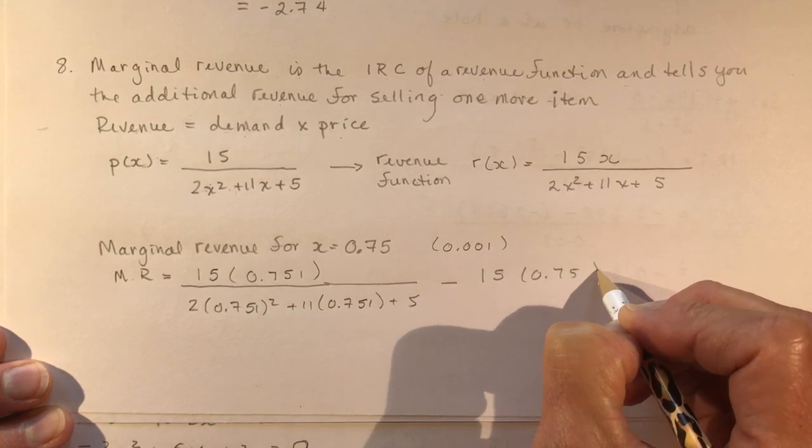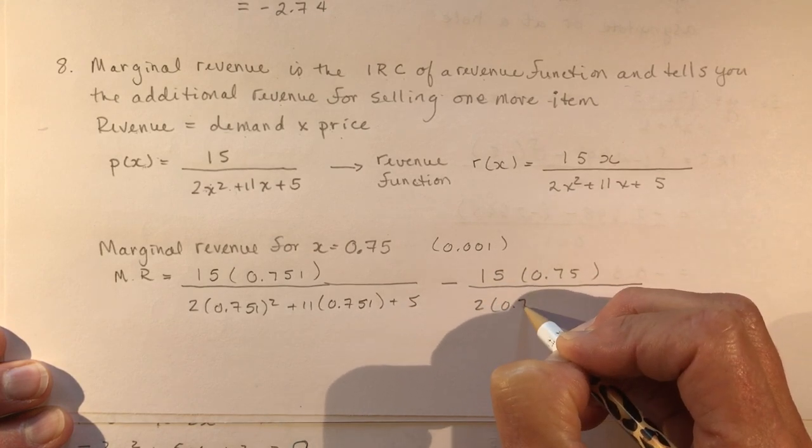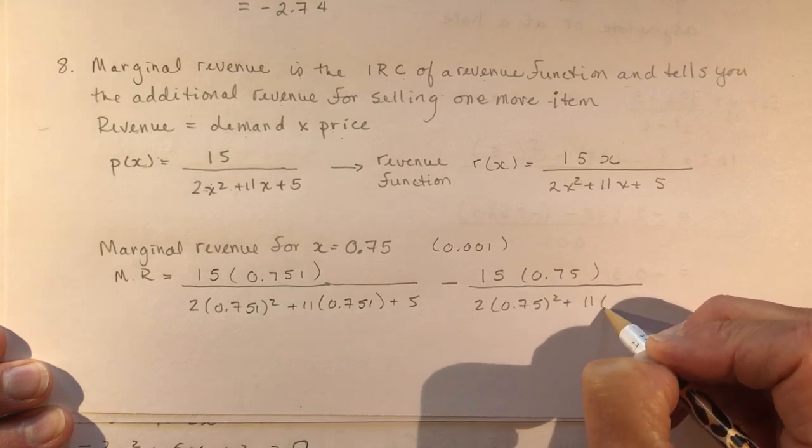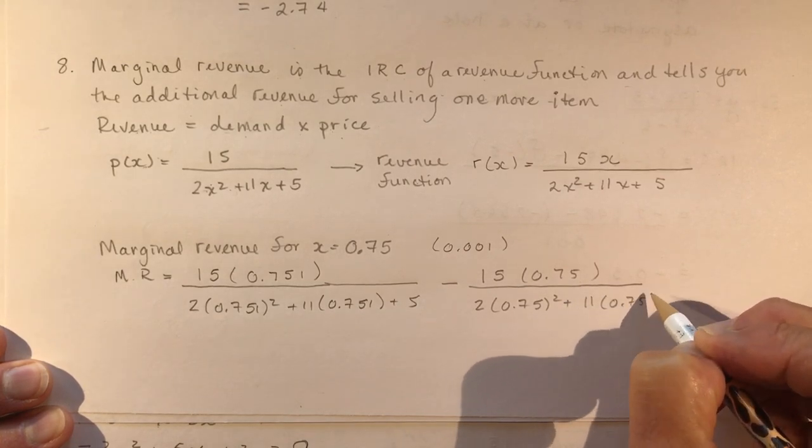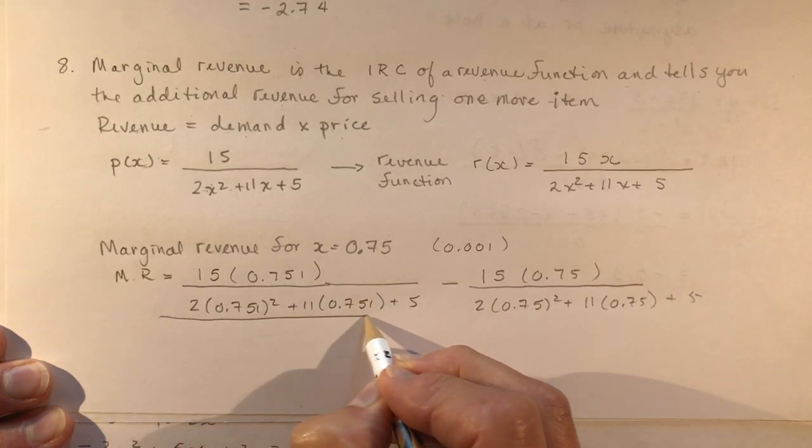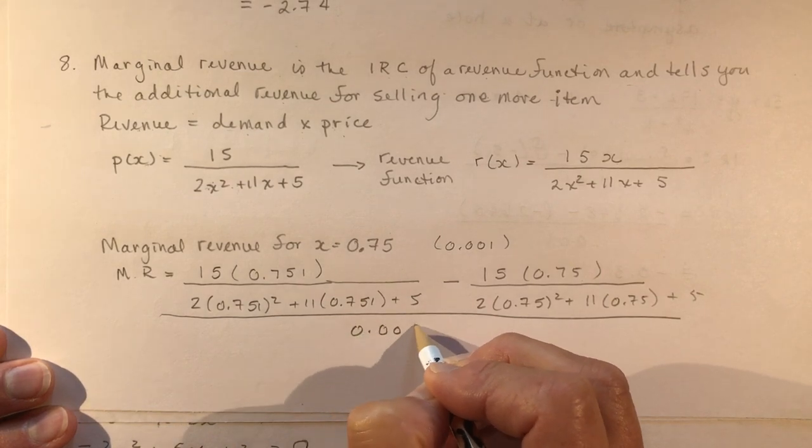And then you have to subtract the same one at 0.751, so you're plugging in the other value. And you're going to do all this math on your calculator. Fortunately, we have such things. 11 times 0.751 plus 5, and the whole thing is over 0.001.